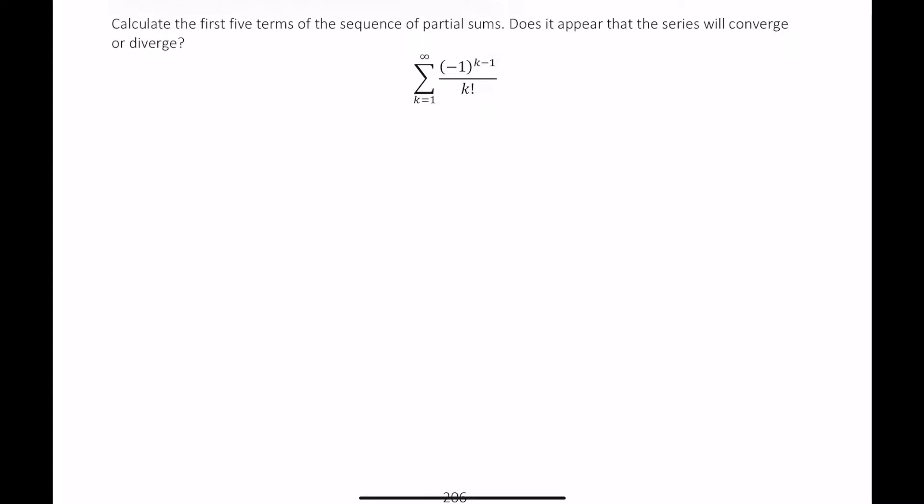Okay, so our first partial sum, S₁, is just the finite sum from k equals 1 to 1 of (-1)^(k-1) over k factorial. So that's equal to (-1)^(1-1) over 1 factorial. All I've done is replace all the k's with 1. And this simply works out to be just 1.